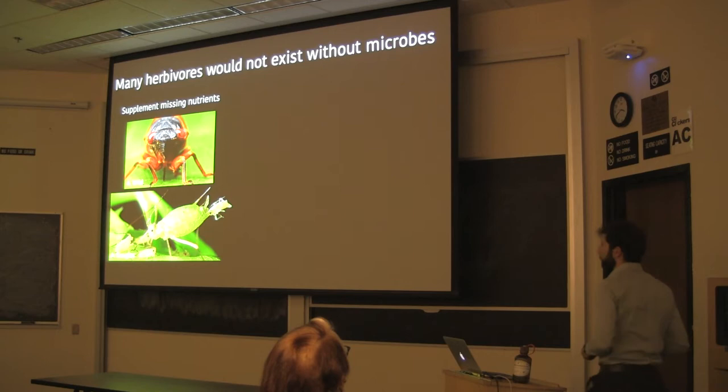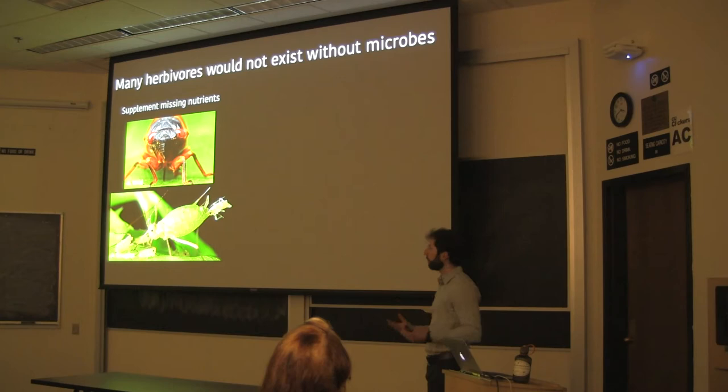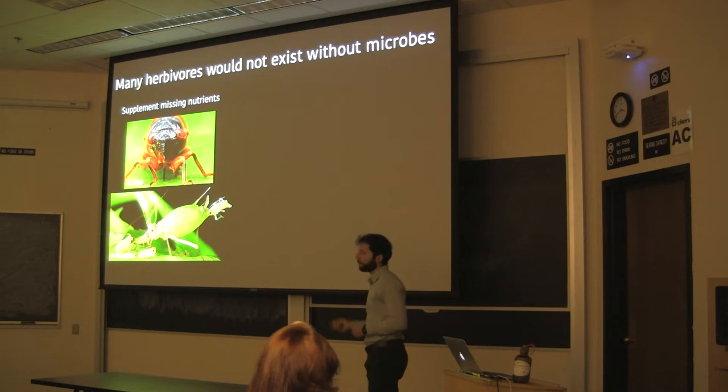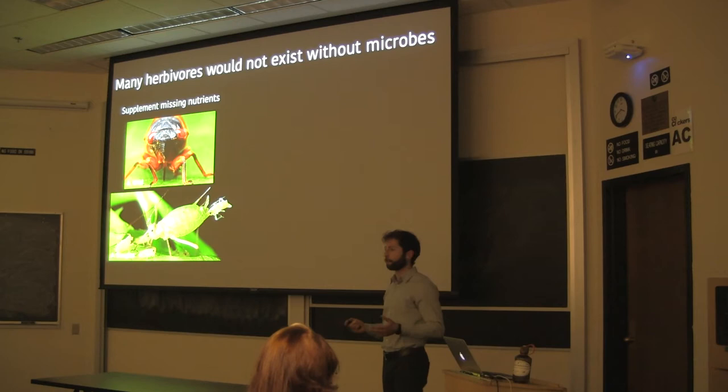Herbivores make up the majority of the biomass of animals as well as the biodiversity, and we've known for a really long time that many herbivore lineages are totally dependent on microbes. To give examples, sap-feeding insects like cicadas and aphids have specialized bacterial symbionts that produce essential amino acids that are missing from their sap diet.